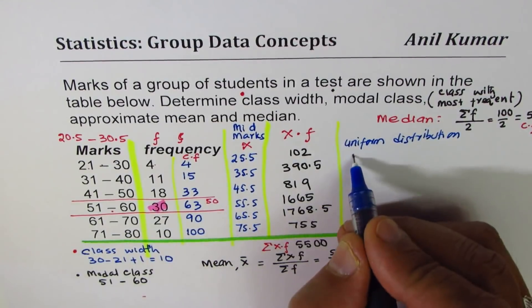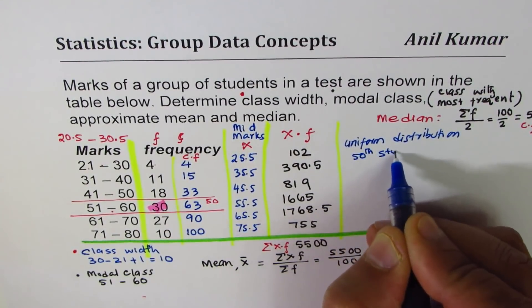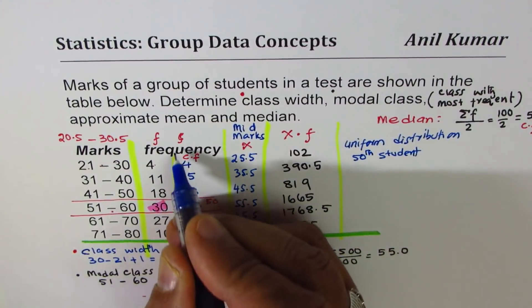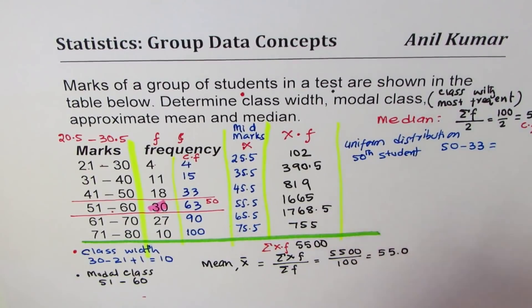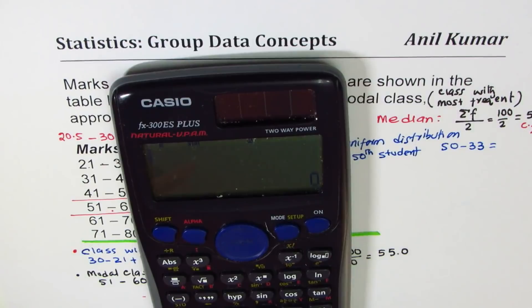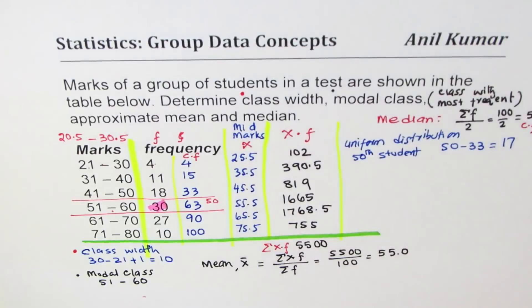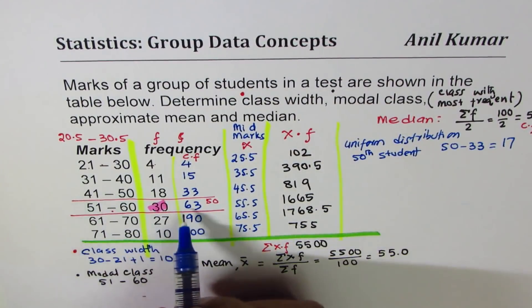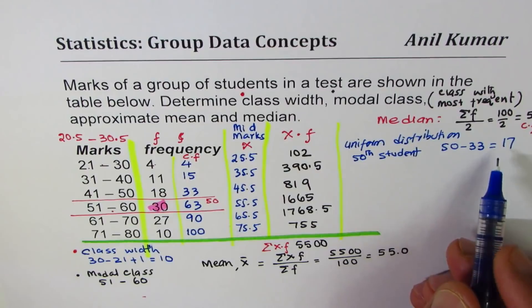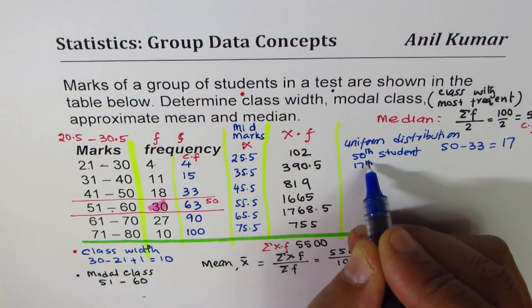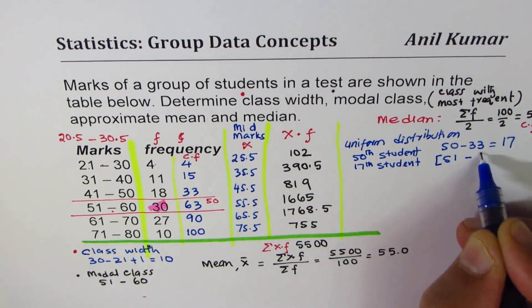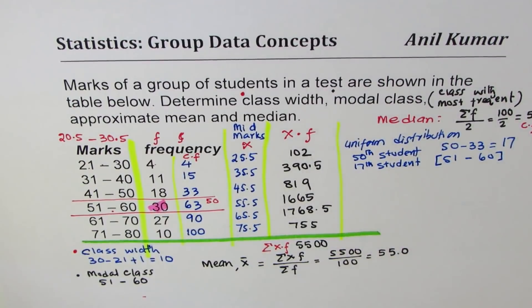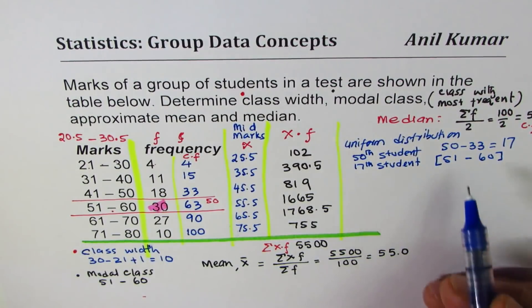Let's see, 50th student - when we say 50th student we know 33 are already before that. So what is 50 minus 33? 50 minus 33 is 17. So what we have here is within this group we are looking for the 17th student in this interval 51 to 60.